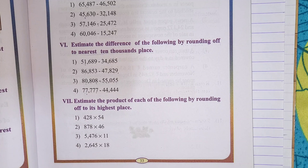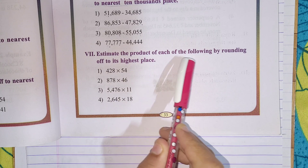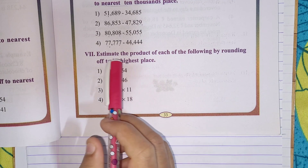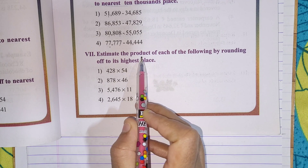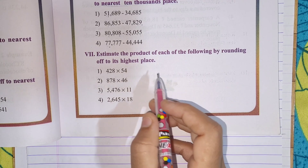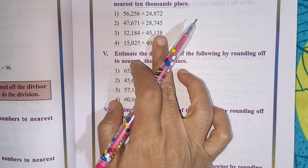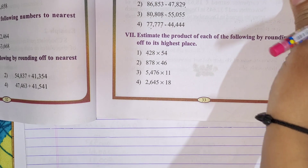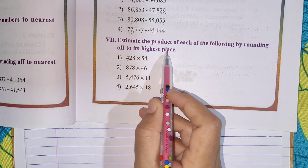So today let us start with the next sum, that is the 7th one: estimate the product of each of the following by rounding off to its highest place. Let me explain. The word 'product' means multiplication. In the previous videos we have done the estimated sum, that is addition, then we have done estimated difference, and here we are going to solve the estimated product of the following numbers by rounding off to its highest place.